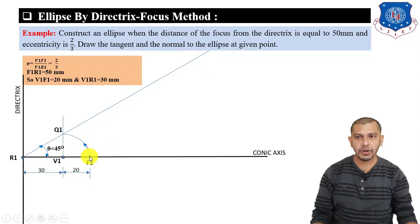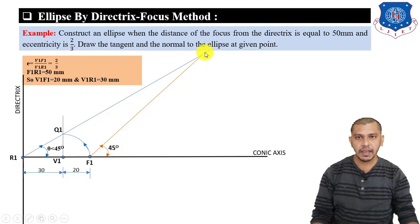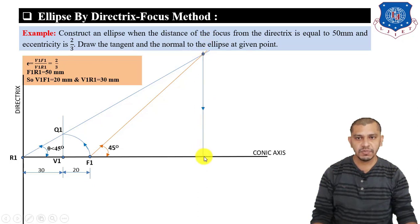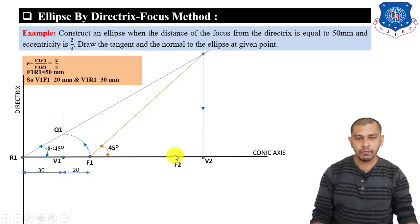From focus point F1, draw a line inclined at 45 degrees to the conic axis. This line will intersect the Q1R1 line at a point. Drop a perpendicular from this intersection point to the conic axis — this gives vertex point V2. From V2, measure and mark F2 (distance = V1F1 = 20 mm) and R2 (distance = V1R1 = 30 mm). From R2, we get the second directrix.